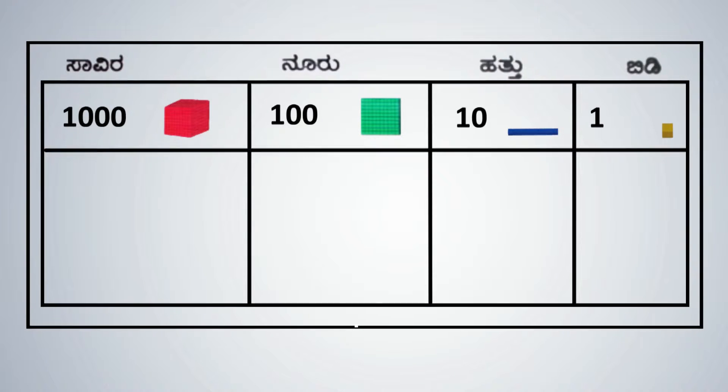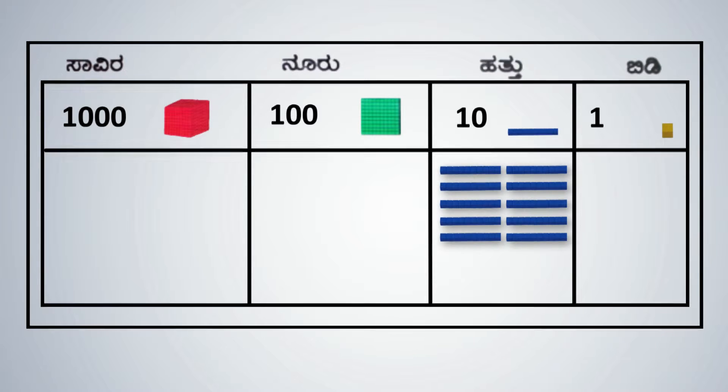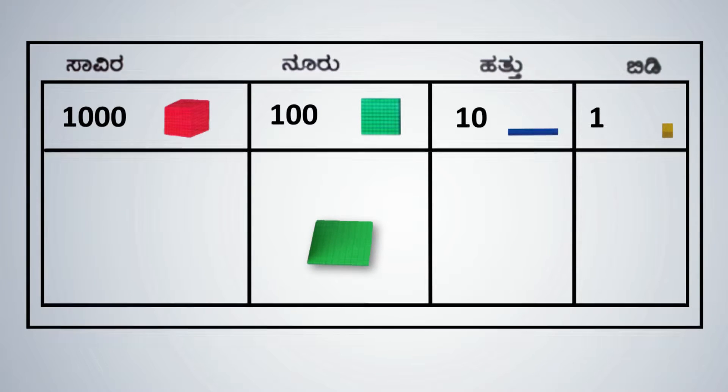Equal distribution can also be taught using base 10 blocks. Each yellow cube represents 1 unit. 10 cubes regroup to form 1 ten, represented by a blue rod. 10 blue rods regroup to form 100, represented by one green plate. And 10 green plates regroup to form 1000, represented by one red cube.